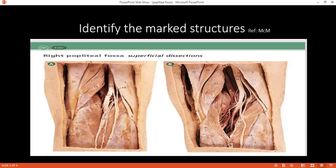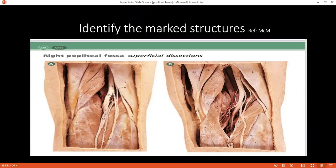Can you tell me the contents of the popliteal fossa from superficial to deep, please? Most superficially would be the tibial nerve, common peroneal nerve, popliteal vein, small saphenous vein, proximal tibial vein, lymph nodes, genicular branches of the obturator nerve, and the popliteal artery would be deepest.